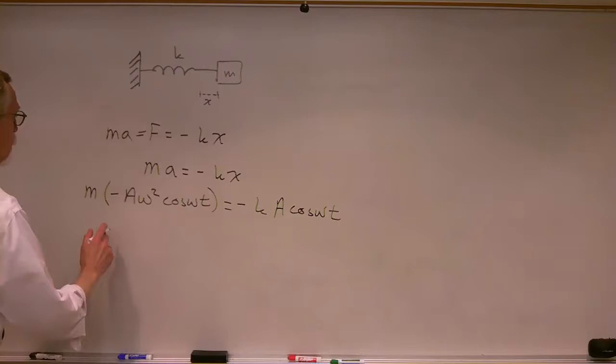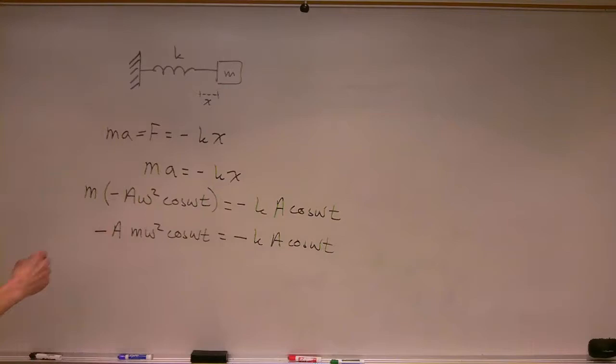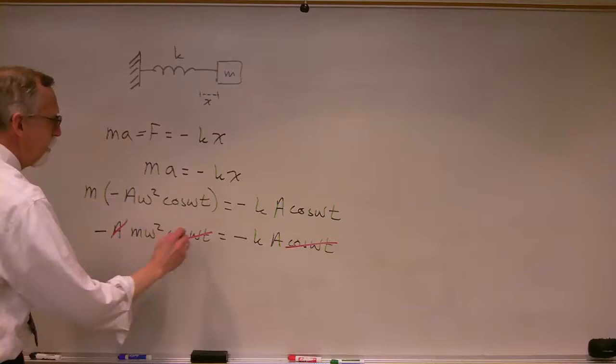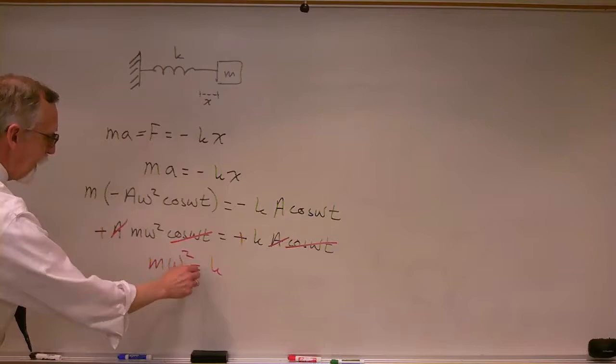Is it possible for these two things to equal each other? We can multiply out: we have minus A m omega squared cosine omega t equals minus k A cosine omega t. We've got cosine omega t on both sides — divide that off. We have an A on both sides — divide that off. We have a minus sign on both sides — divide that off. And what do we have? We have m omega squared equals k.